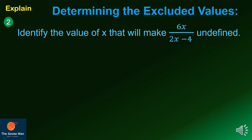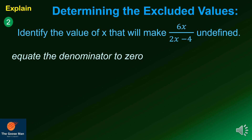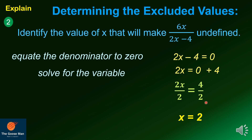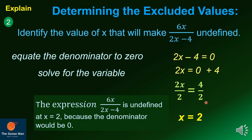Example number 2: identify the value of x that will make 6x all over 2x minus 4 undefined. We equate the denominator to zero: 2x minus 4 equals zero. Solving for the variable, add both sides by 4 to get 2x equals 4, then divide both sides by 2, so x equals 2. Therefore, the expression is undefined at x equals 2 because the denominator will be zero.